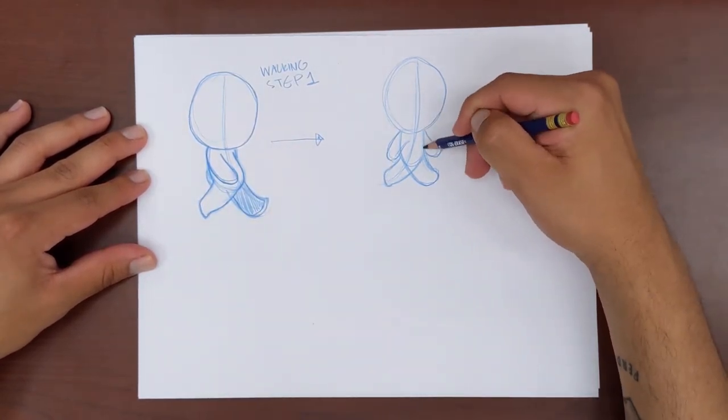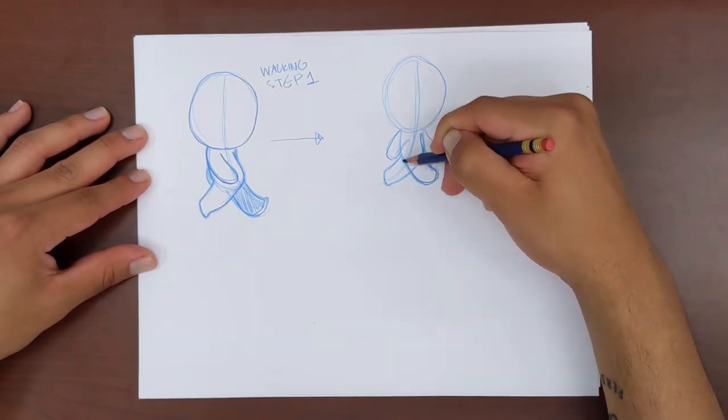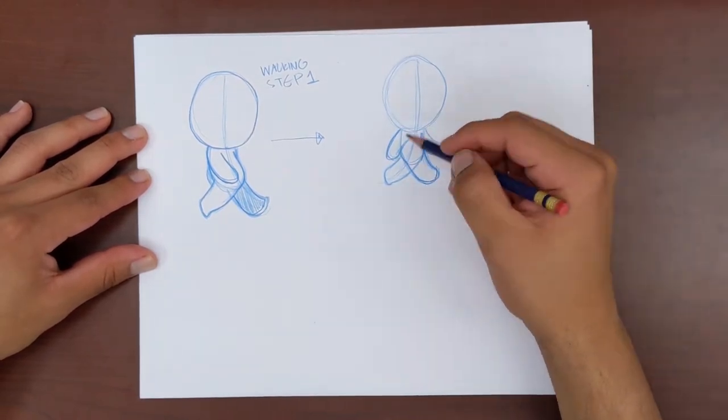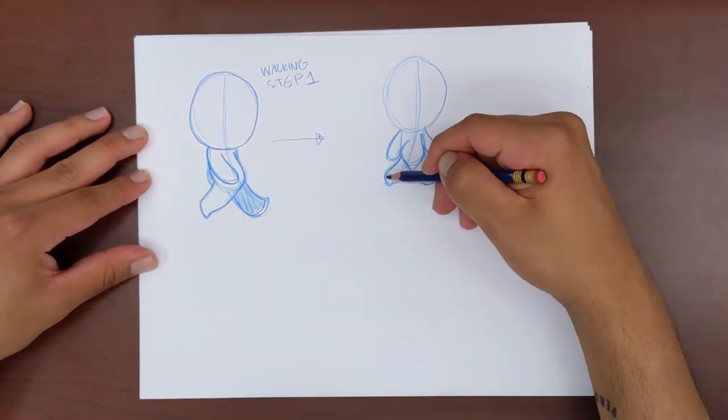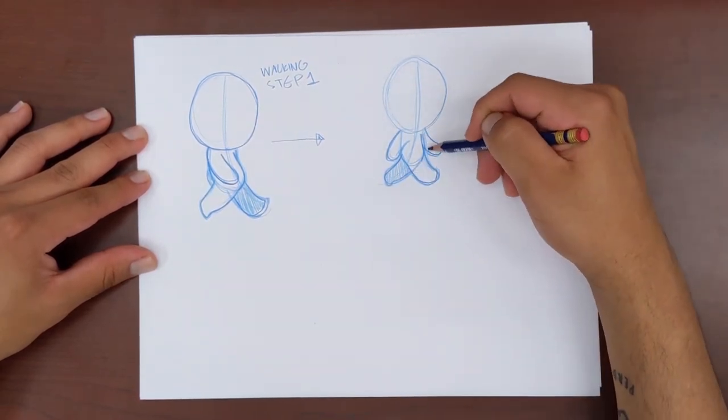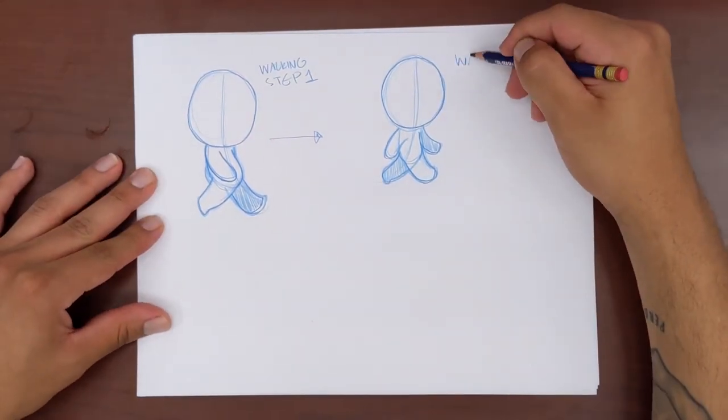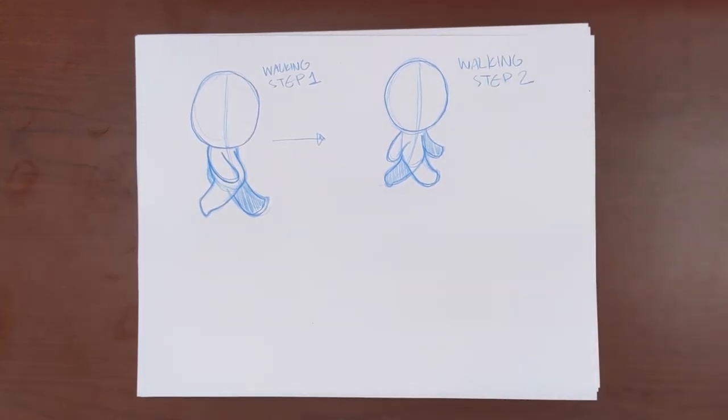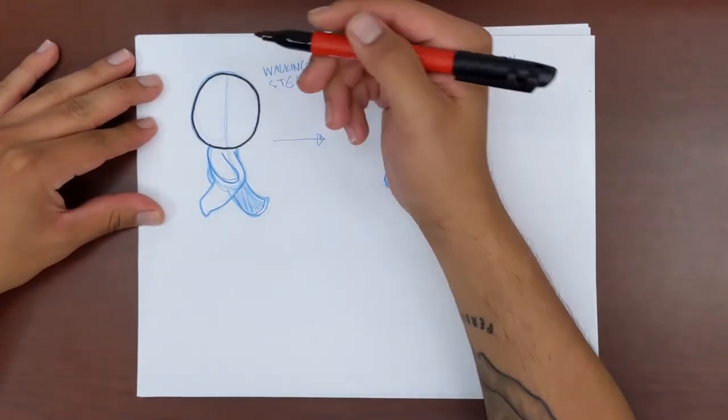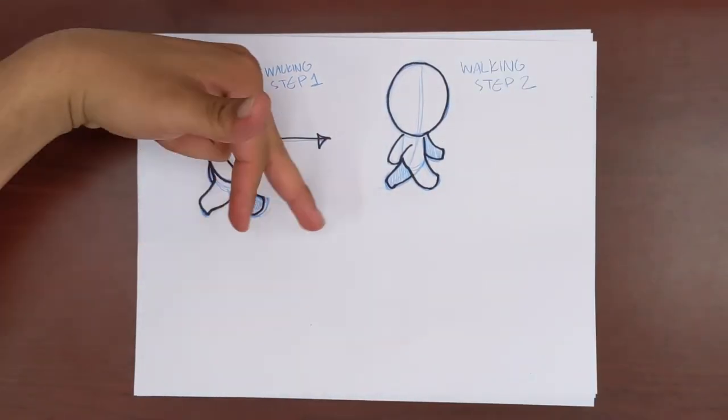This will also be the case for our character's arms. Their arm that was swinging forward is now swinging backward, and their arm that was swinging backward is now swinging forward. Now you can go back with your pencil and darken in the lines over this character, and shade in their far side limbs as well to help you differentiate. Once you shade in their limbs, you can see a lot more clearly the difference of them taking their two different steps. Congrats! Now we have our character's basic walking motion down.